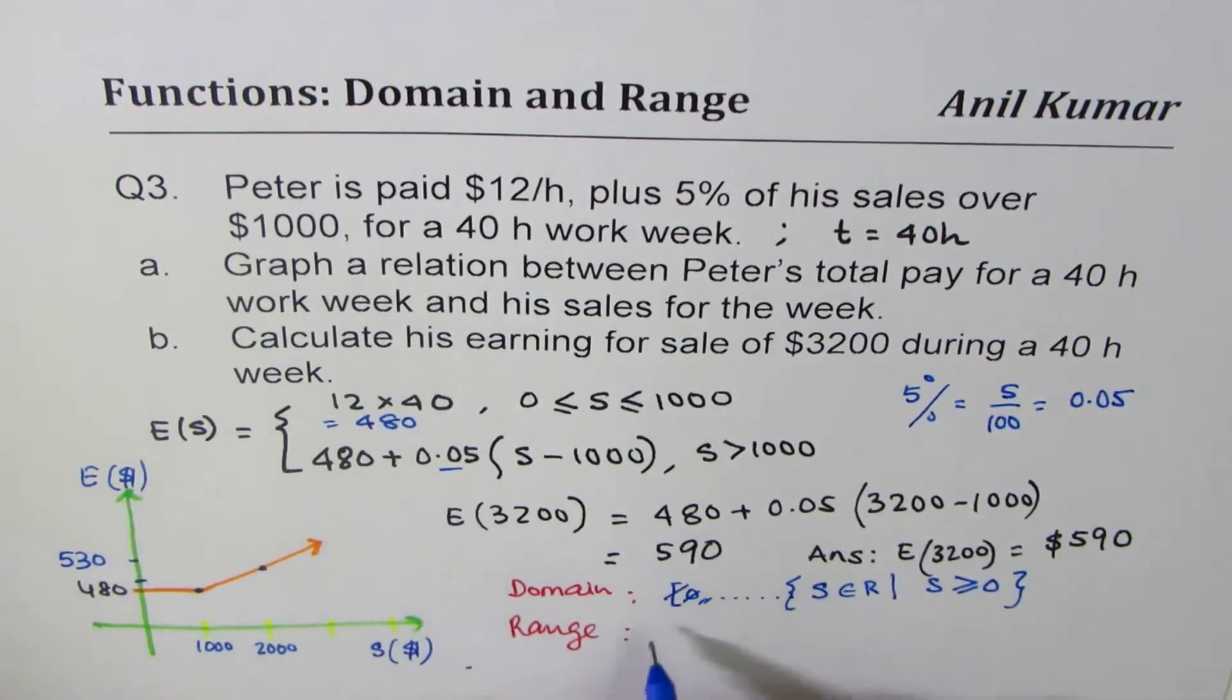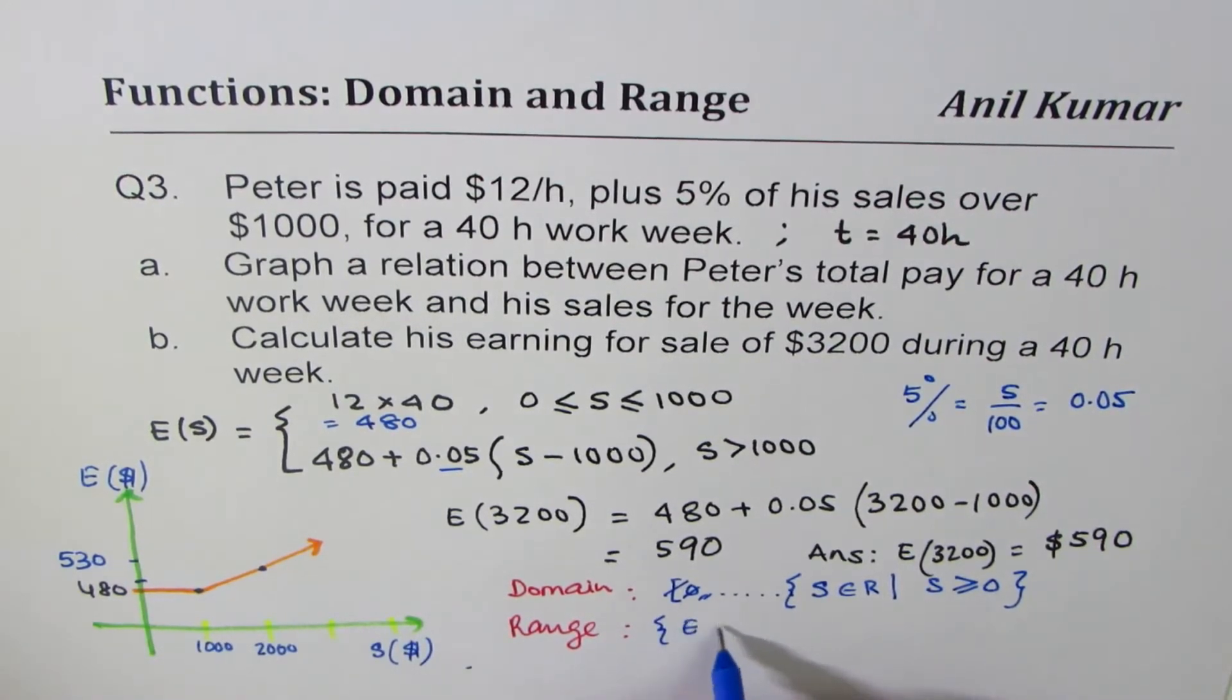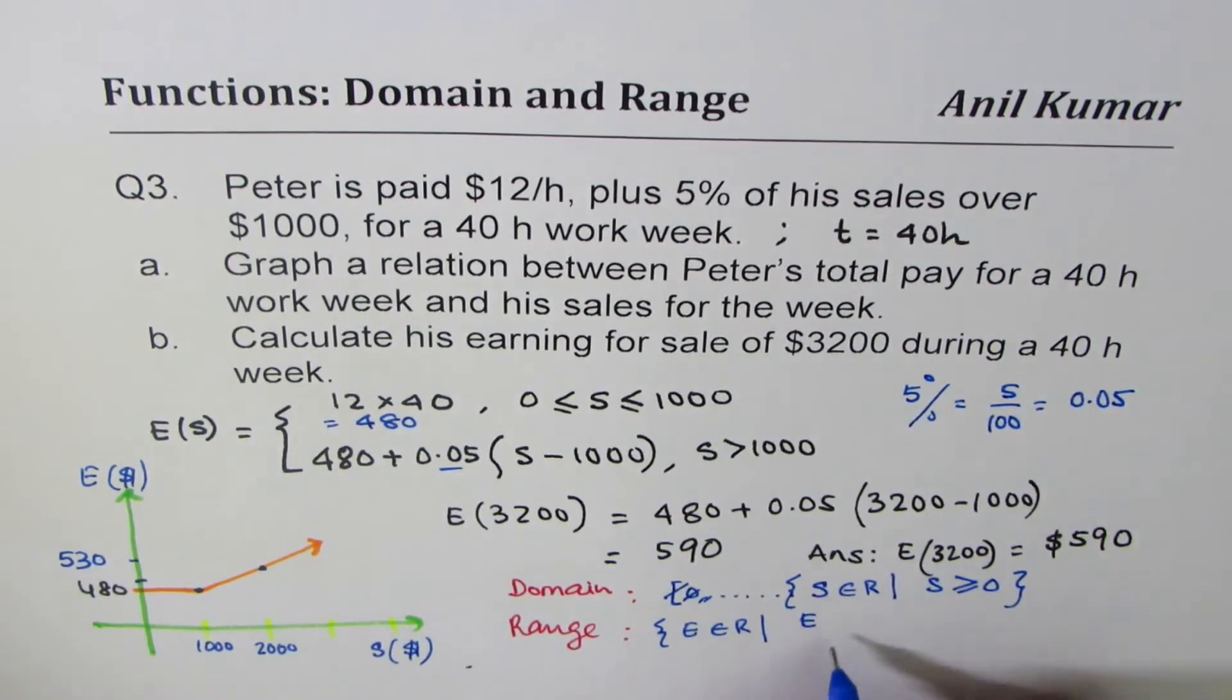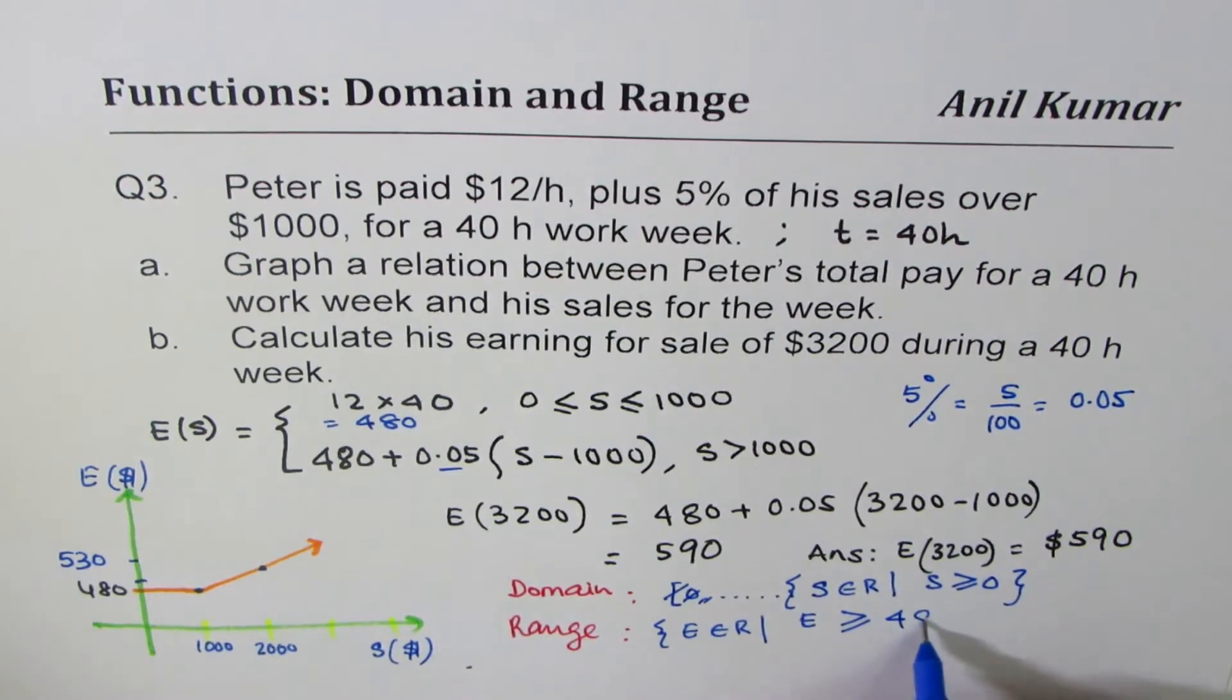As far as the range is concerned, range is about the earnings. So the earnings belongs to real numbers and the earnings are more than 480 dollars. So we get earnings as greater than equal to 480 dollars. So that could be the range.